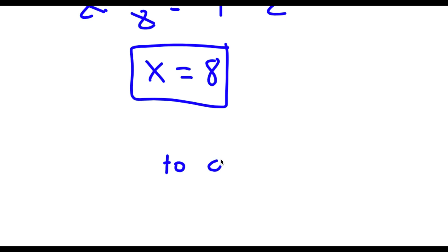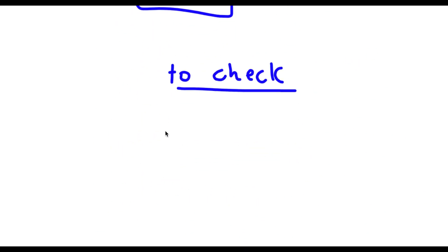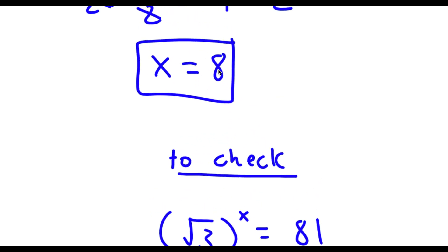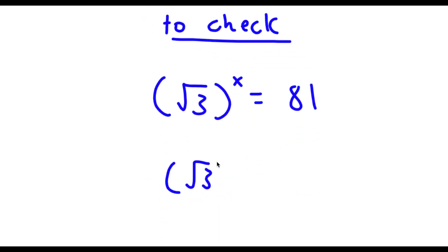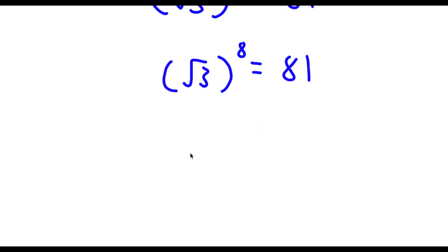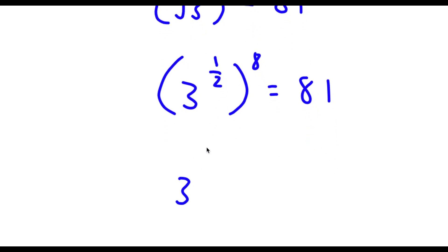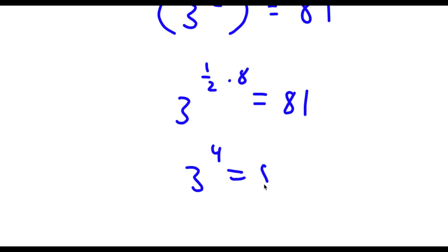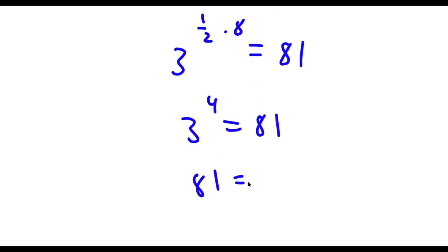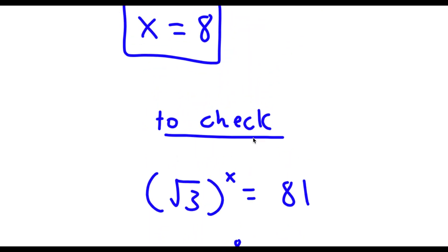So now to check: I have the square root of 3 to the power of x is equal to 81, and x equals 8. So I have the square root of 3 to the power of 8 is equal to 81. The square root of 3 is 3 to the power of 1 half, so 3 to the power of 1 half to the power of 8 equals 3 to the power of 4, which is 81. So 81 equals 81 — my solution is correct.